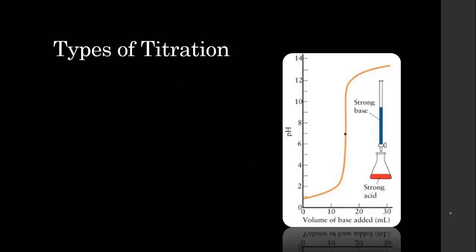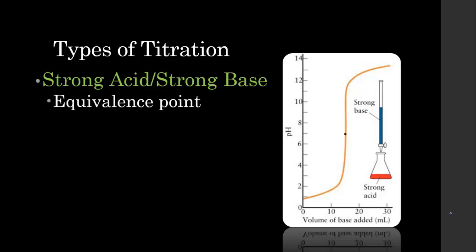We keep talking about the type of indicator depends on the type of titration. So what kinds of titrations can we have? The first type of titration is a strong acid, strong base type. Its equivalence point is going to be about a pH of 7, so it's going to be pretty neutral.